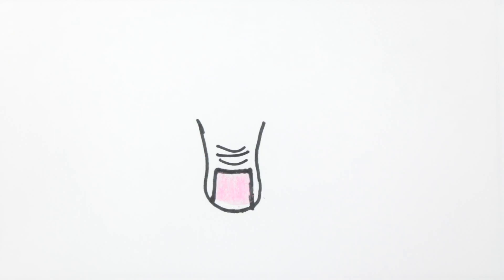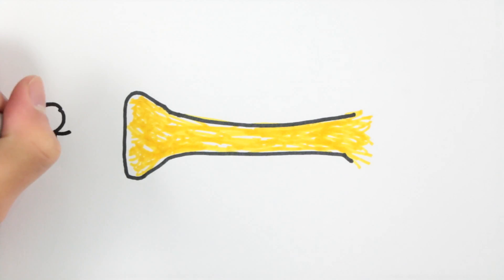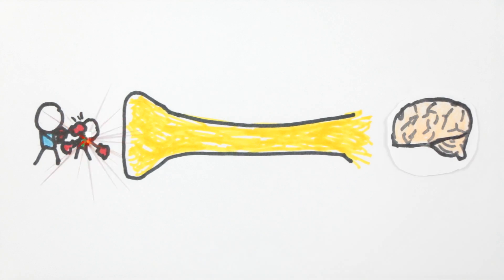Well, the toes, like any other part of the body, contain nociceptors which can feel pressure like a punch or stab and can relay pain signals to the brain.